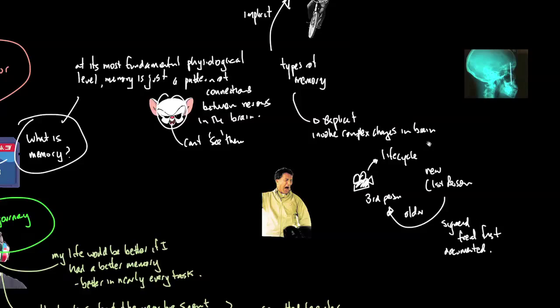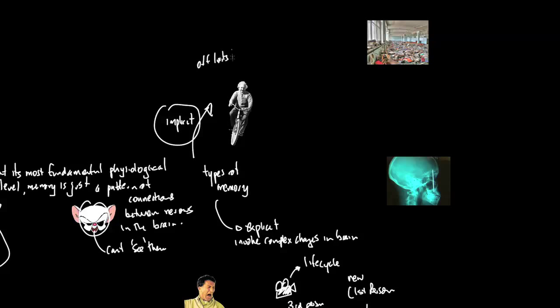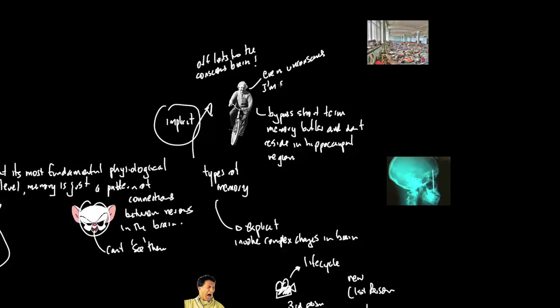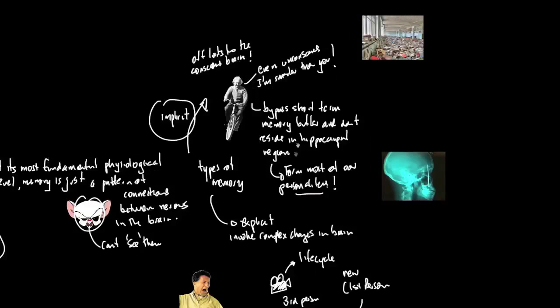Implicit memories are off limits to the conscious brain. Riding a bike, you don't actually seem to access them directly. They bypass the short-term memory buffer and don't go via the hippocampal region, which manages most of the other memory. So they're really interesting because you can't really tap into them. But the point is made that the majority of your personality seems to be formed by implicit memories.